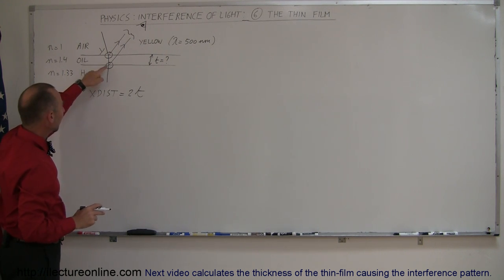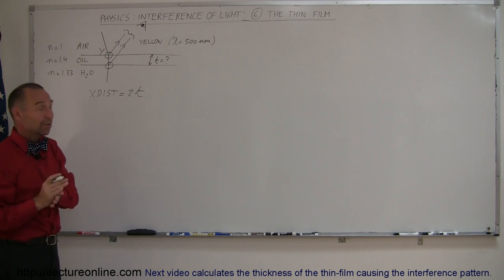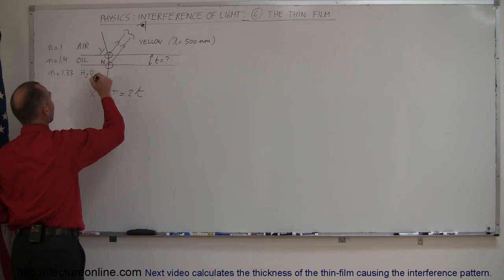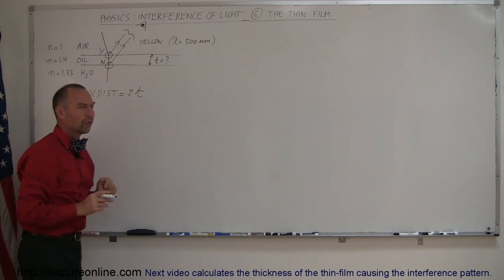Then we get to the other side where we have the boundary between oil and water, and here the index of refraction on the other side is smaller than it is where the light came from. So here there will not be a phase shift, and so we write the letter N for no. So yes there was a phase shift there, no there was no phase shift there.